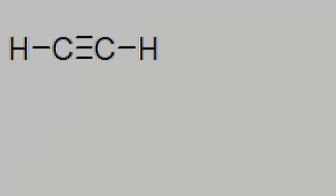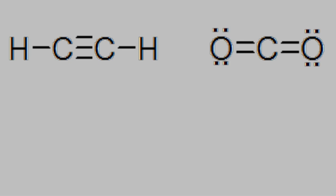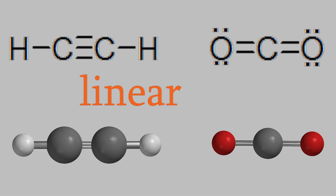Finally, if the central atom has a triple bond or two double bonds, the orbitals combine to make hybrid orbitals that form a linear molecule. This type of hybrid is called an sp hybrid. The carbon in carbon dioxide and also in acetylene both have sp hybrid orbitals, and that's why these are linear molecules.